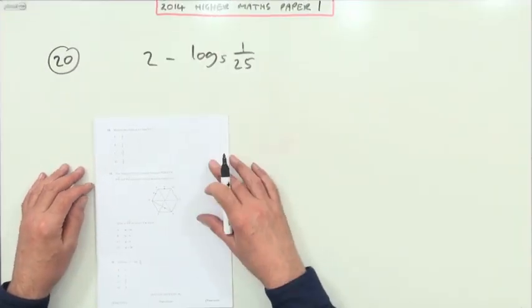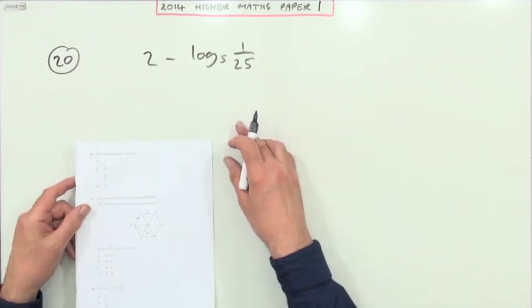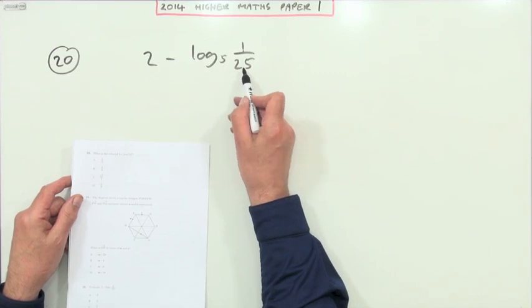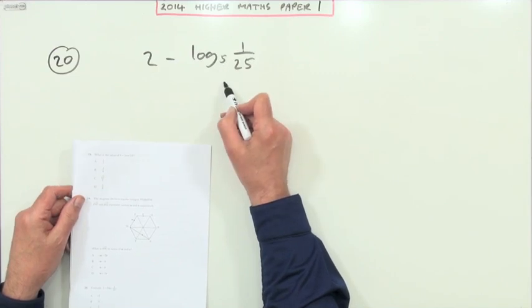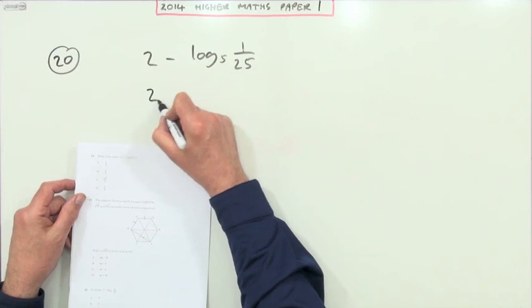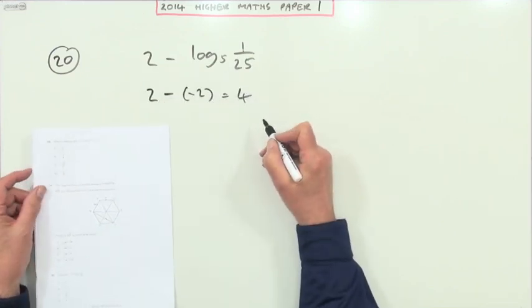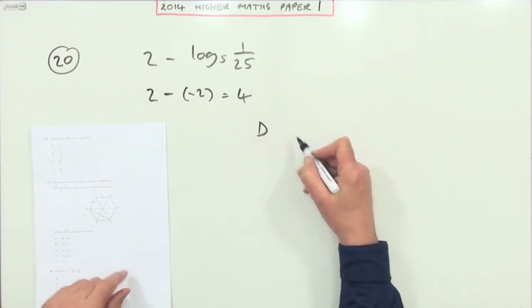The last one simply says evaluate this. That's a lot easier than the previous couple of questions because that just says what power of 5 is 1 over 25? Well that's about negative 2, so that must be 2 minus negative 2, which is 4. The answer is D.